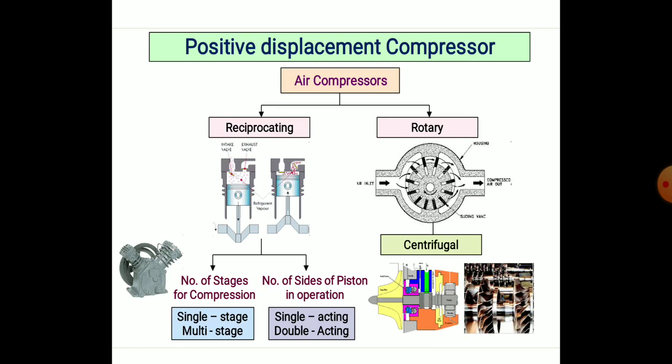In rotary compressors, centrifugal vanes are provided which rotate around the periphery of a circular disc. On the left side, you can see the air inlet at atmospheric temperature and pressure. Due to rotation of the vanes, the pressure of the air is raised and delivered at high pressure on the right-hand side outlet.